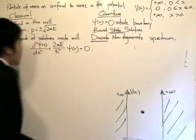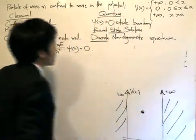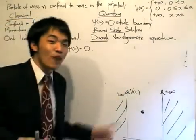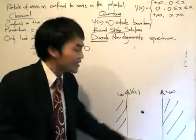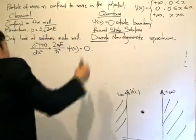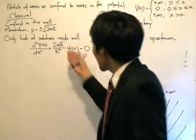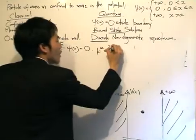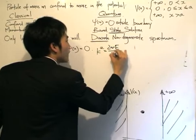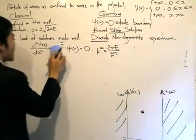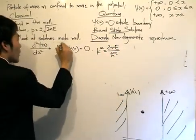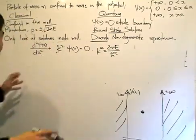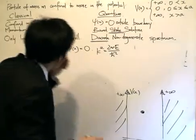Some things in classical physics and quantum mechanics differ, but some are also the same — as we see with the infinite square well. So we will look at the solutions inside the well, because the wave function equals zero outside the boundary. I've written down the Schrödinger equation and rearranged it into this form. We let k² = 2mE / ℏ², replace the relevant term with k², and then write down the solutions directly.